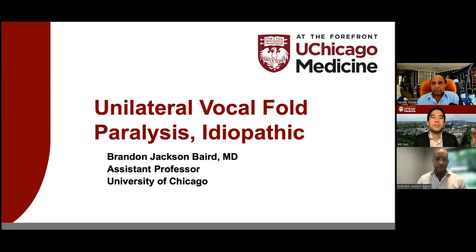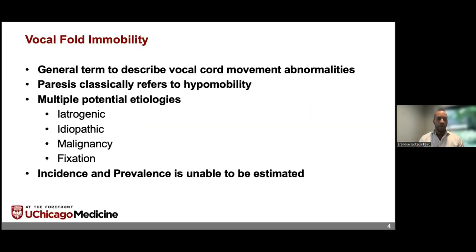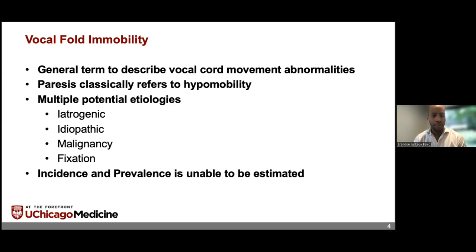The term paralysis, as Dr. Oswald said, is not specific enough for what we want to talk about. We'll talk about a framework for considering immobility rather than paralysis. Immobility is a general term describing the vocal fold movement abnormality. Terms like paralysis, palsy, and paresis were thrown around; however, immobility and hypomobility more accurately describe loss of movement of the cord — paresis being synonymous with hypomobility. There are a number of different potential etiologies: iatrogenic, idiopathic, malignant, and fixation.